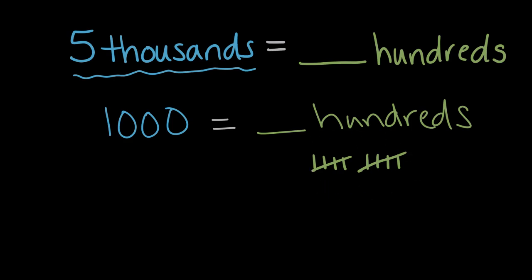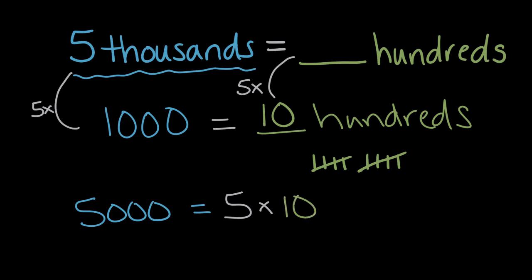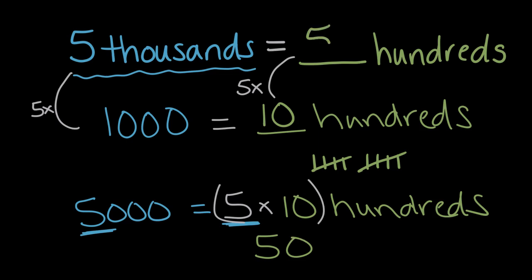So it took ten hundreds to get to a thousand. So one thousand is ten hundreds, so what would five thousand be? Well five thousand, five thousand is five times as many thousands. So we're also gonna have five times as many hundreds. So five thousands will equal five times ten hundreds. Because we have five thousand this time, so we have five times ten hundreds. Or five times ten, five times ten is fifty. So five thousand equals fifty hundreds.